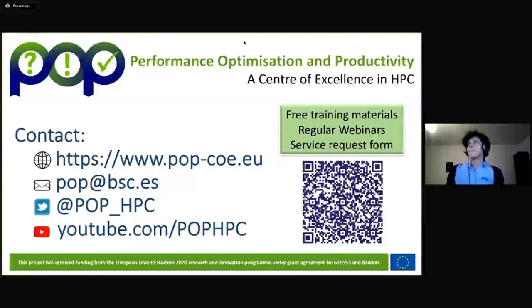Here you can see the POP metrics for the case of an MPI application. These metrics are arranged in a hierarchy, and at the bottom of this hierarchy there are metrics for common causes of inefficiencies, such as load imbalance or data transfer.